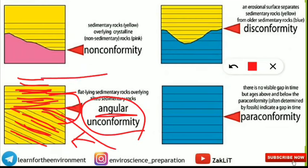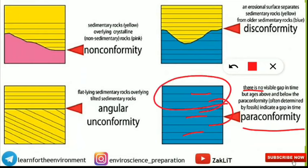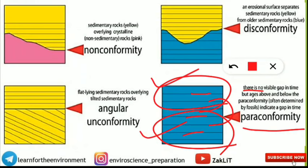This unconformity is called angular unconformity because the angle changes — flat above, angular or tilted below. The last and very important one is paraconformity. Paraconformity means there is no visible gap in time, but the ages above and below the paraconformity indicate a gap in time. You cannot distinguish any visible change — the sedimentary rock type and angle everything looks the same — but analysis through fossils reveals a change in geological formation time for the rocks above and below.